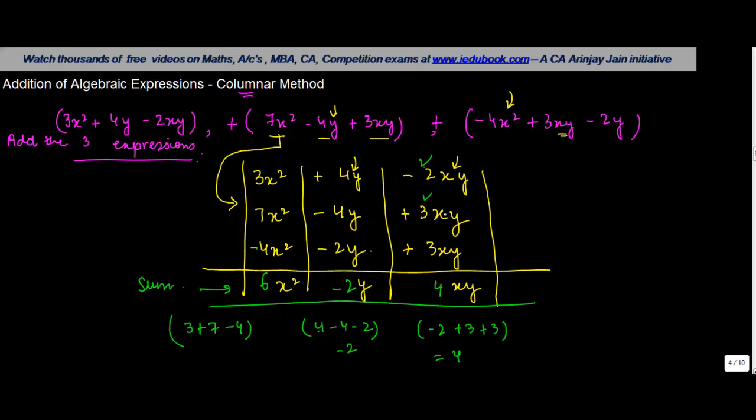It might just happen that in some cases, a particular variable may or may not be there in all the examples. So let's say for example, if minus 2y was not here, then what would have happened?